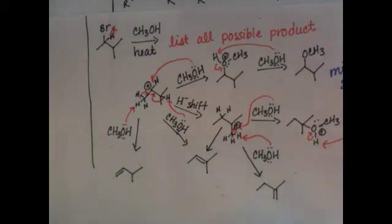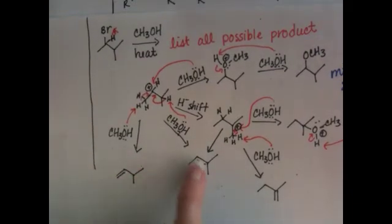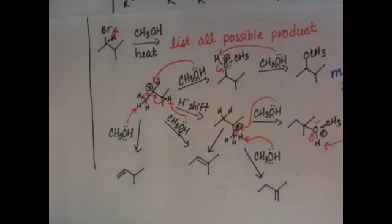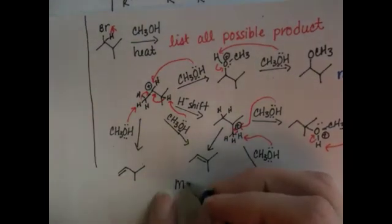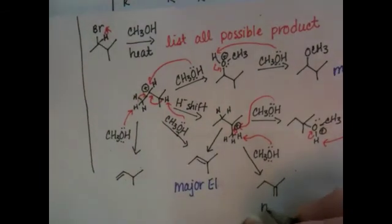This alkene has only one R group on it. This alkene has one, two, three R groups on it. This alkene has two. So the second one is the major E1 product, and the other two are minor E1 products.